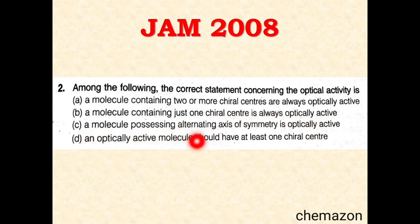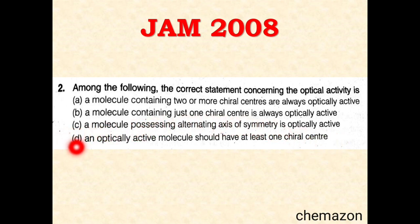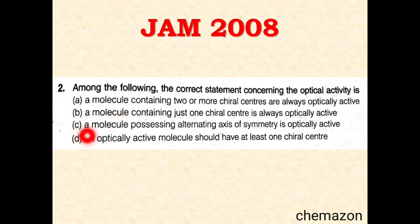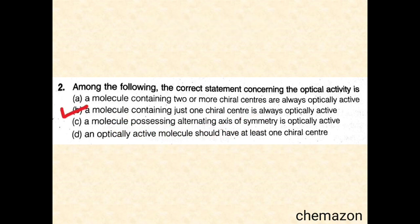Option D — an optically active molecule should have at least one chiral center — this is also incorrect. As seen in previous videos, compounds like cumulenes and biphenyls have no chiral center but the overall molecule is still chiral. So the correct answer is option B.